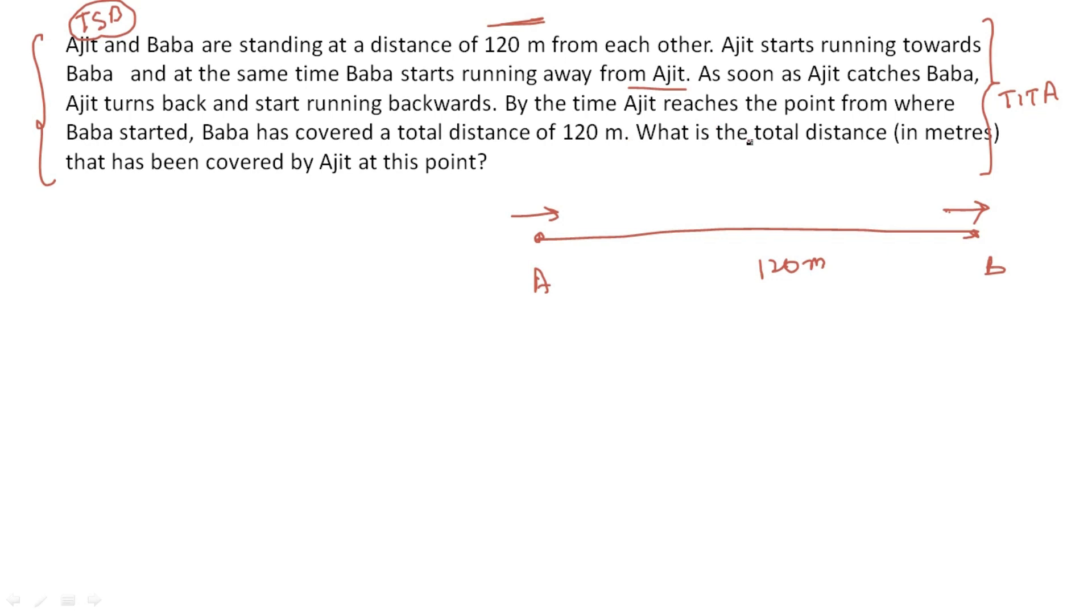They are saying that by the time Ajit reaches the point from where Baba started, Baba has already covered 120 meters. Let's say that Ajit has caught Baba at this point. Then Ajit turns back to the point where Baba started. Meanwhile, as Ajit is returning, Baba keeps running forward.